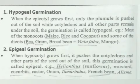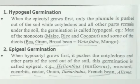Then we come to epigeal germination. When the hypocotyl grows first, it pushes the cotyledons and other parts of the seed out of the soil. This germination is called epigeal.